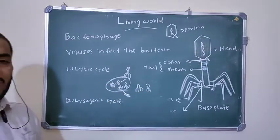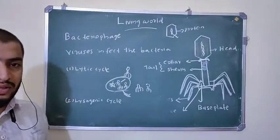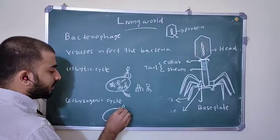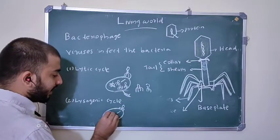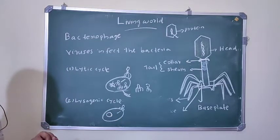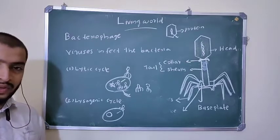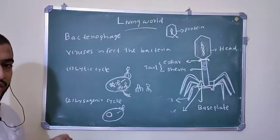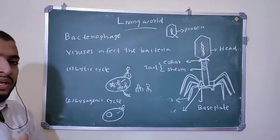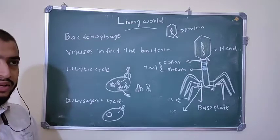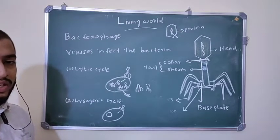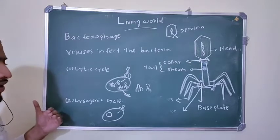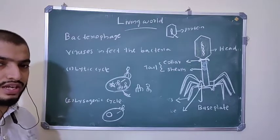In the lysogenic cycle, bacteriophage inject their DNA, but this DNA gets integrated with the bacterial DNA rather than suppressing it. The phage DNA that integrates is called prophage. When bacterial DNA divides, phage DNA also divides. They are like in a sleeping mode — they do not cause problems to the bacteria. That is the lysogenic cycle.